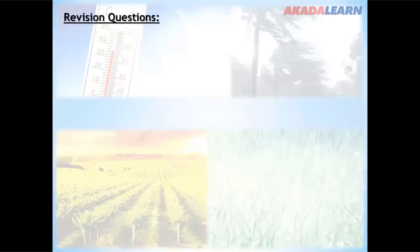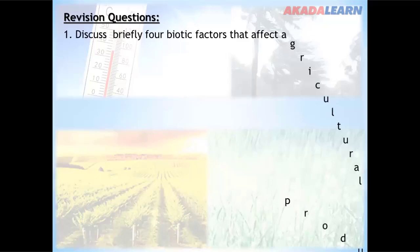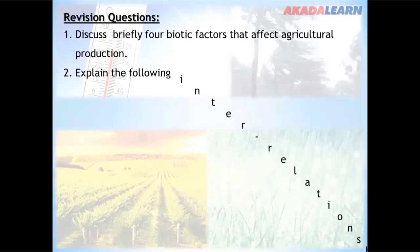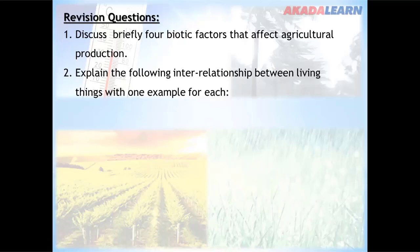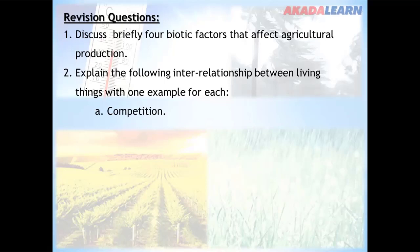Revision questions: Number one — discuss briefly four biotic factors that affect agricultural production. Number two — explain the following interrelationships between living things, with one example for each: competition, parasitism, symbiosis, and predation. If you find it difficult to answer these revision questions, go over this video again and that will make it easier for you.